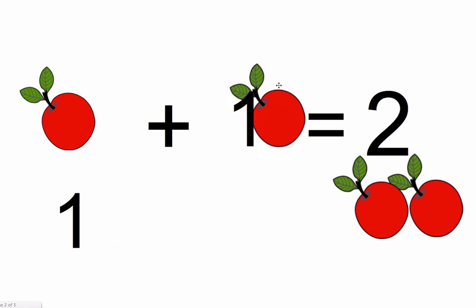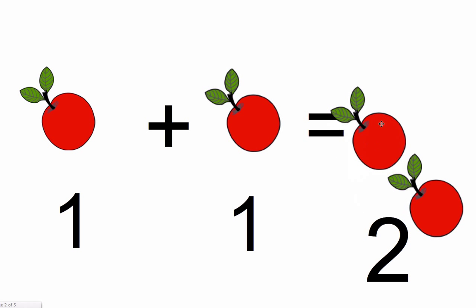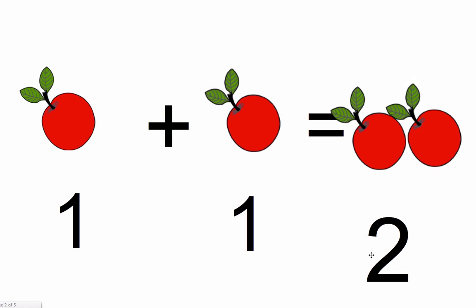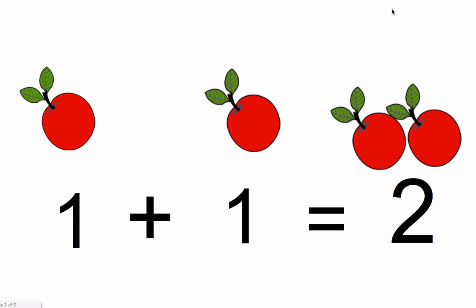And then, you have another apple. Well, one apple plus another apple. What does that equal? That equals two apples. So, one plus another one equals two. Doesn't have to be apples. It can be the number itself. One plus one equals two.